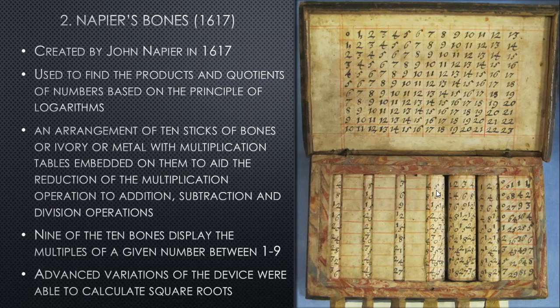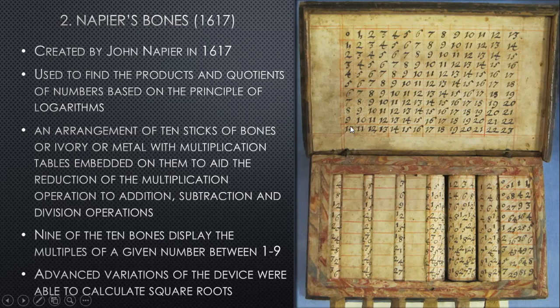Napier's Bones was constructed as an arrangement of ten sticks — ten sticks of bones, ivory, or metal — which had the multiplication tables embedded on them. These multiplication tables aided the reduction of multiplication operations to addition, subtraction, and division. Nine of the bones display the multiples of a given number between one to ten. Advanced variations of the device were able to calculate square roots.